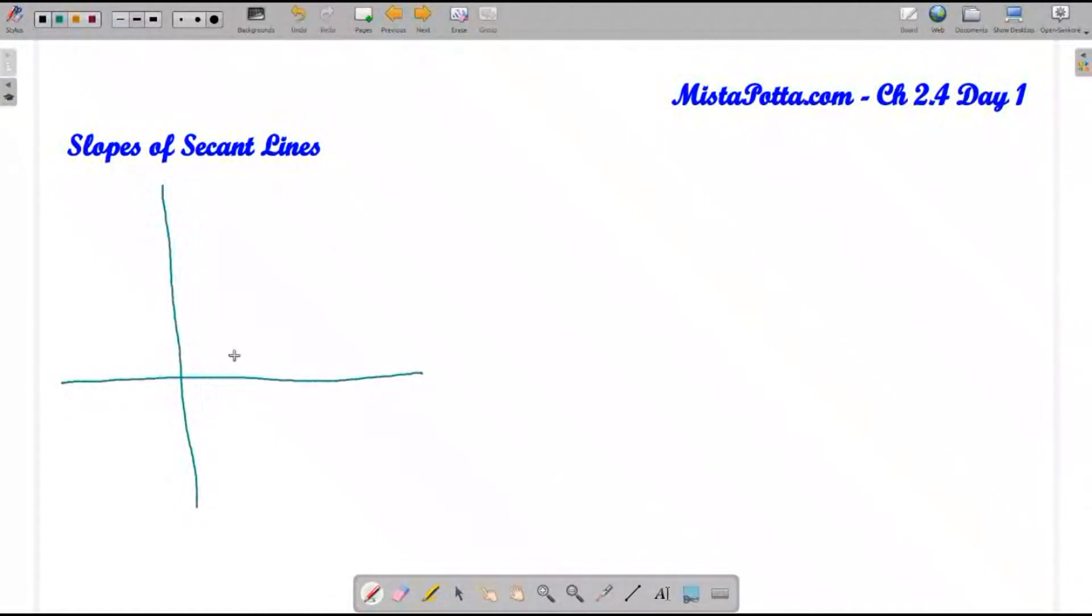I want to talk about these secant lines. We just had a parabola and points on that parabola: point 1,16; point 2,64; point 3,144; 4,256; and 5,400. If I take a look at the secant lines, remember that secant lines in geometry were the lines that crossed a curve at two places.